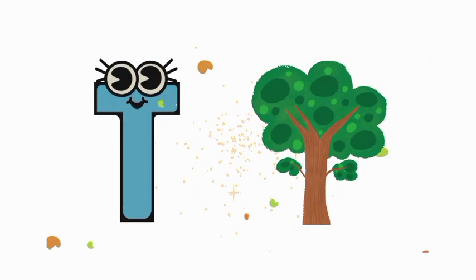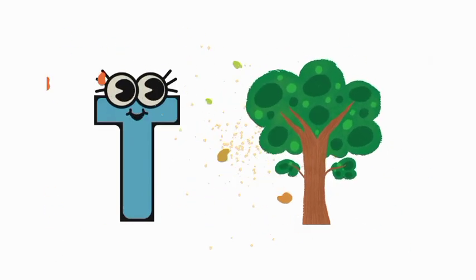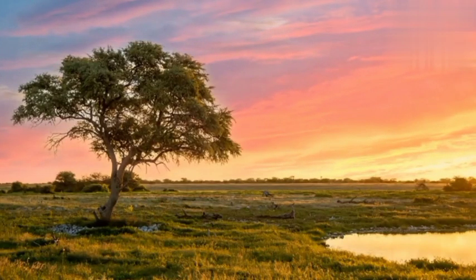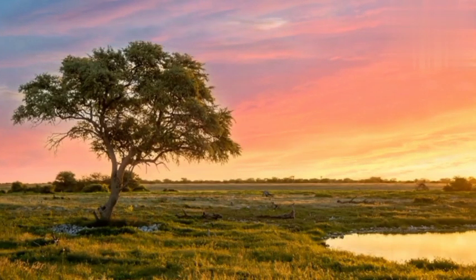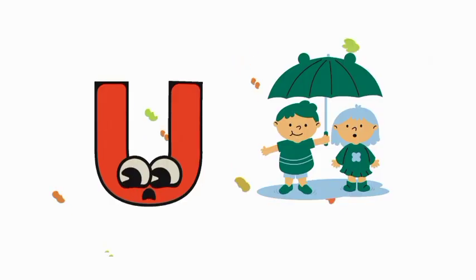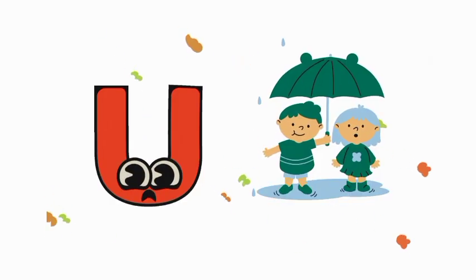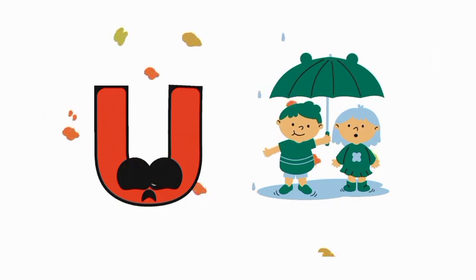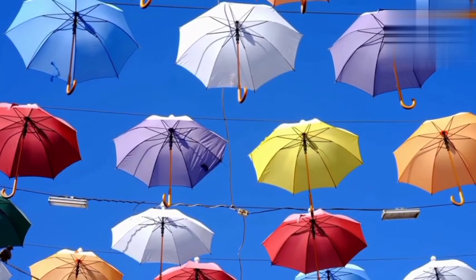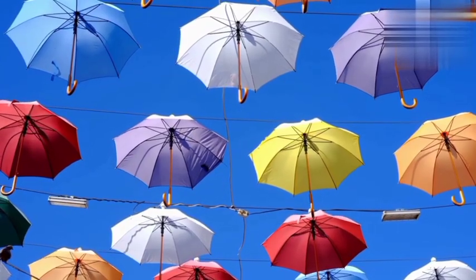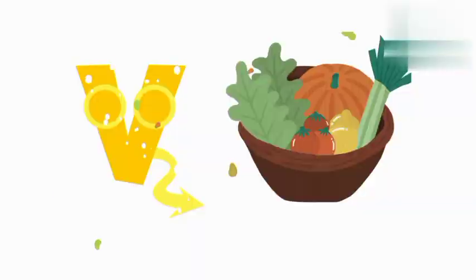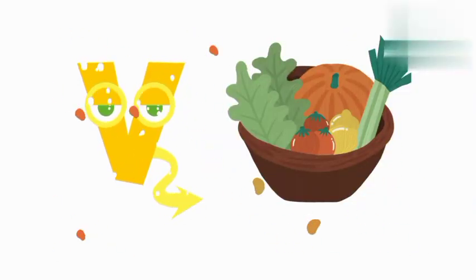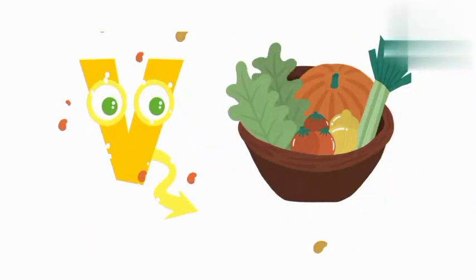T is for tiger. T, T, tiger. U is for umbrella. U, U, umbrella. V is for vegetables. V, V, vegetables.